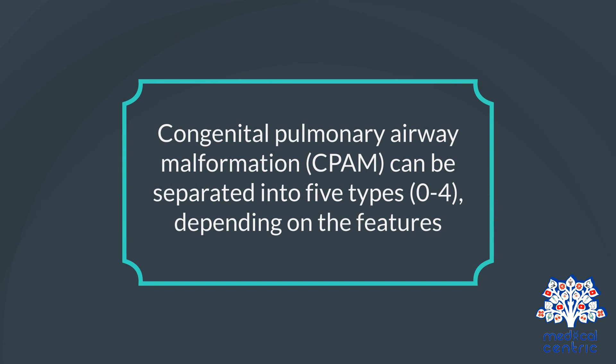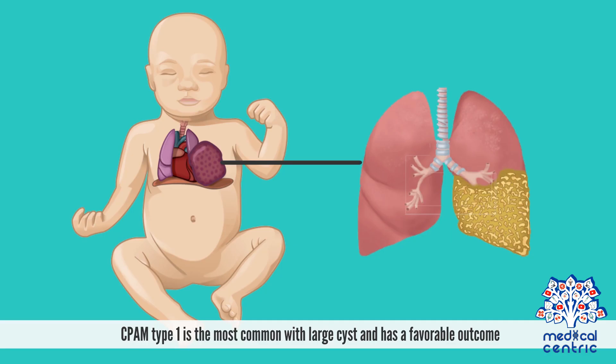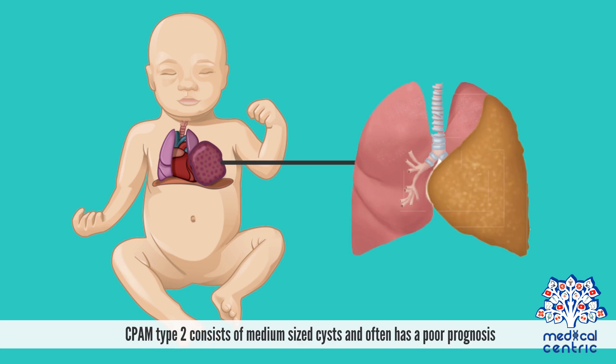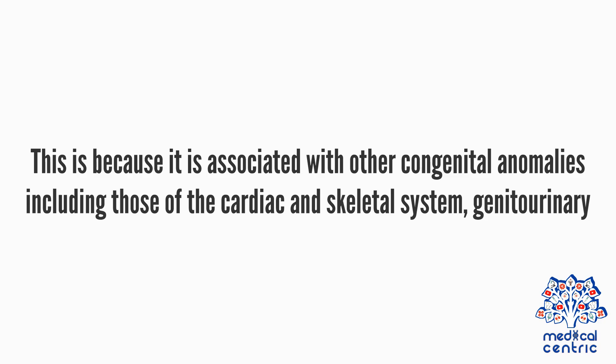Congenital pulmonary airway malformation, or CPAM, can be separated into five types, 0 to 4, depending on the features. CPAM type 1 is the most common, with large cysts, and has a favorable outcome. CPAM type 2 consists of medium-sized cysts and often has a poor prognosis. This is because it is associated with other congenital anomalies, including those of the cardiac and skeletal system.